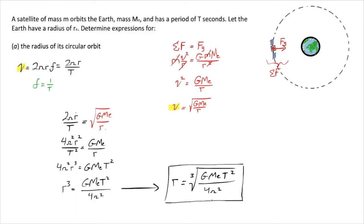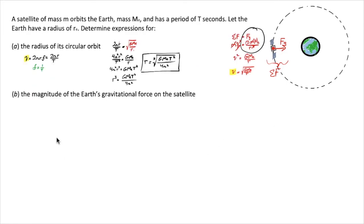If you have a different planet or different object, just change the variable you're using for the mass. But this is good for this problem, and in general for problems like this it would be true.